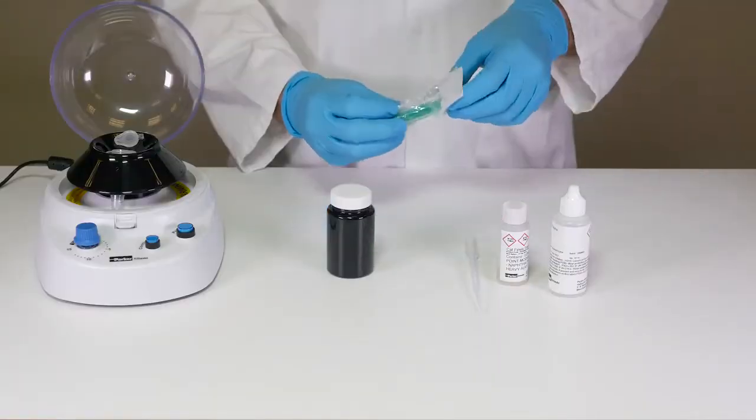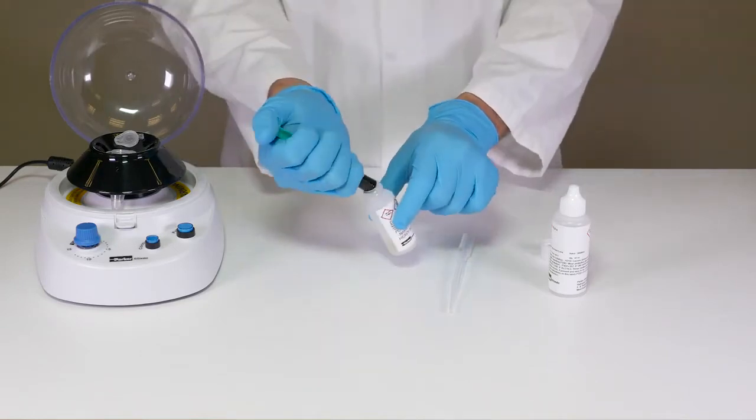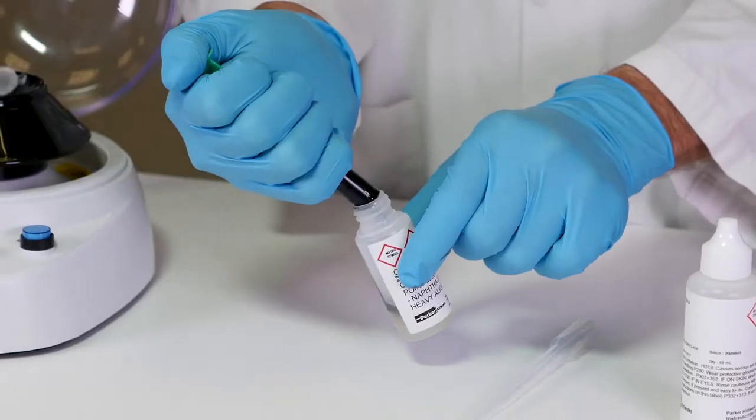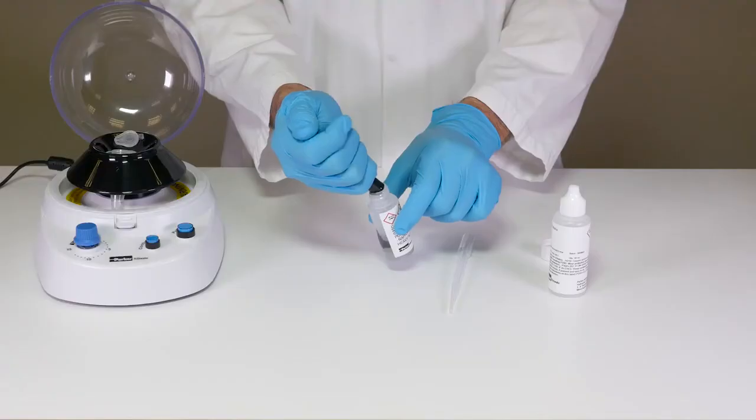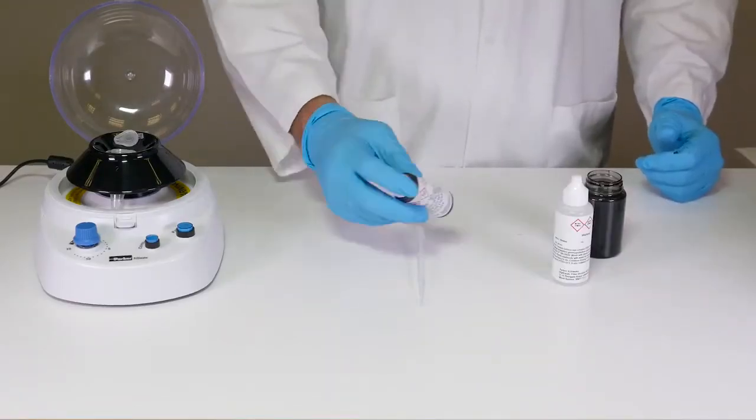Completely fill the five milliliter syringe with heavy fuel oil sample. Add all of the heavy fuel oil sample in the syringe to the cat fines test fluid bottle. Replace the cap and shake vigorously for three minutes.